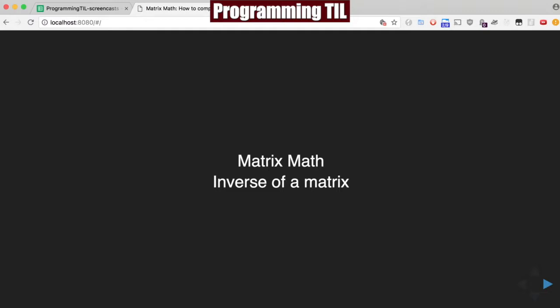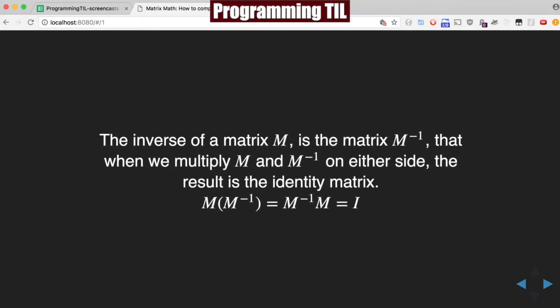Today we're going to be looking at the inverse of a matrix. The inverse of a matrix M is the matrix M to the negative 1. If we multiply M and M to the negative 1 together, we result in the identity matrix.